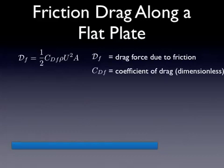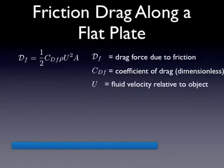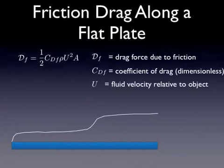Density is the density of the fluid. We use u for velocity rather than v to designate that we're talking about the fluid velocity relative to the object — so we've changed our coordinate system. We now assume the object is stationary and the fluid is flowing past it. As fluid passes over a flat plate, it forms a boundary layer, which typically looks something like this.